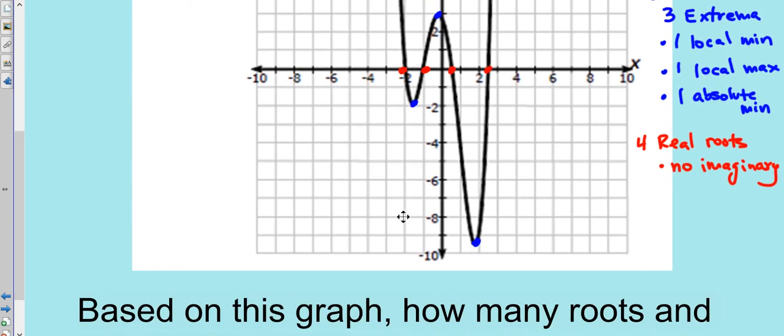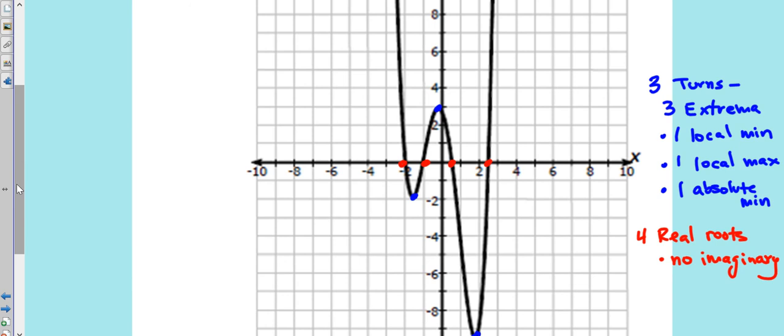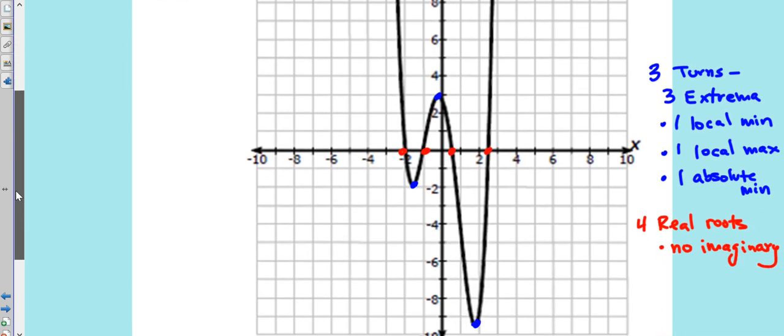Now, if it said what are the total, including imaginary, that's where we had a problem, another problem on this ACP review, where if this graph was, say, shifted up a few units, and this part did not actually touch, you would still call a root. They would just be imaginary. So let me show you what I'm talking about.